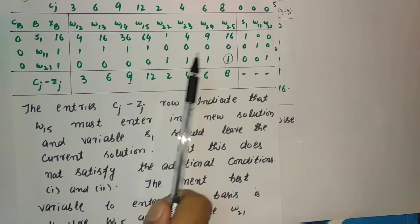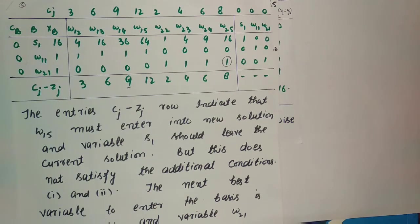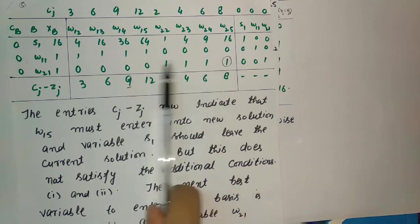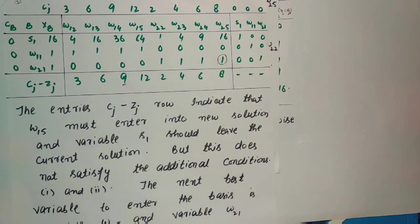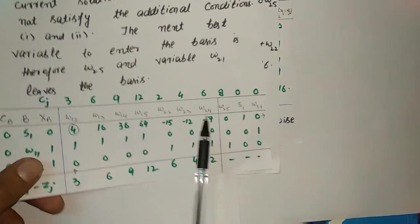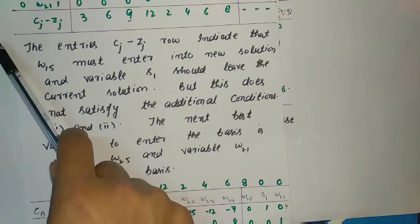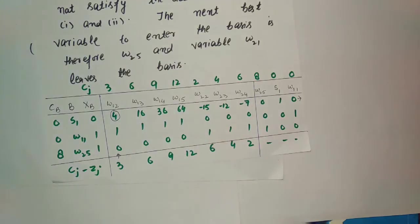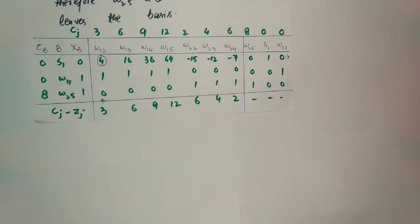By the usual simplex process, I update the table — making the pivot element equal to 1 by dividing the pivot row, then eliminating other entries. Note: w₁₂ has been removed from the basis and since w₁₂ is an artificial variable, I will not write w₁₂ in this table.